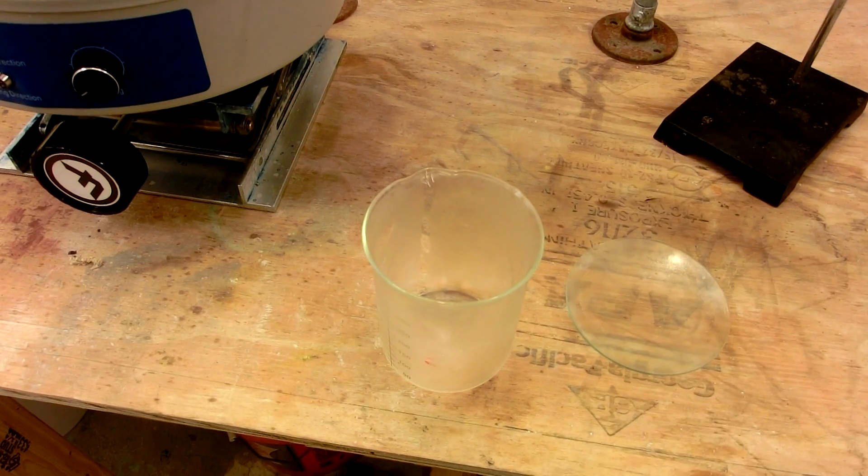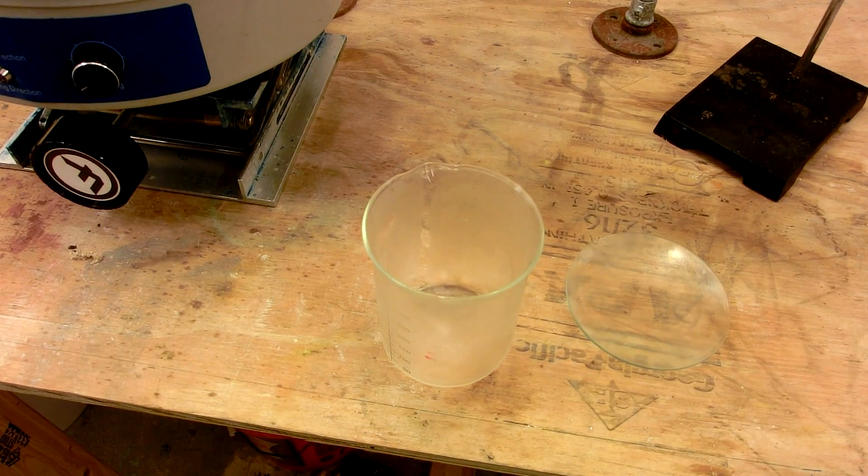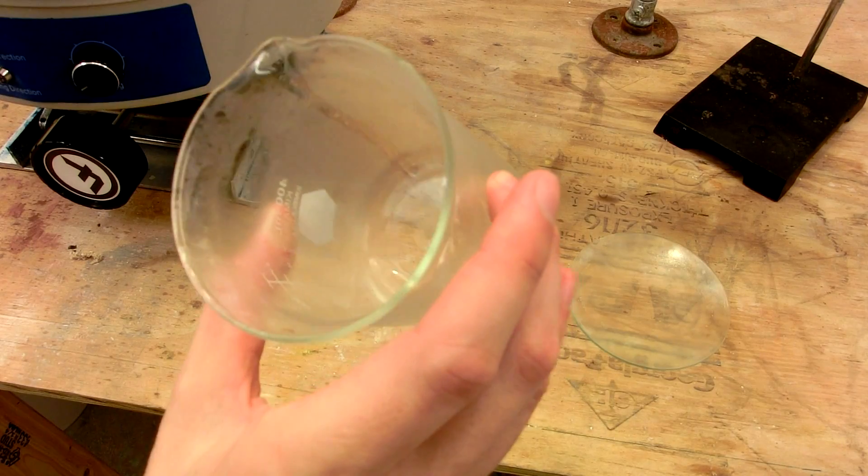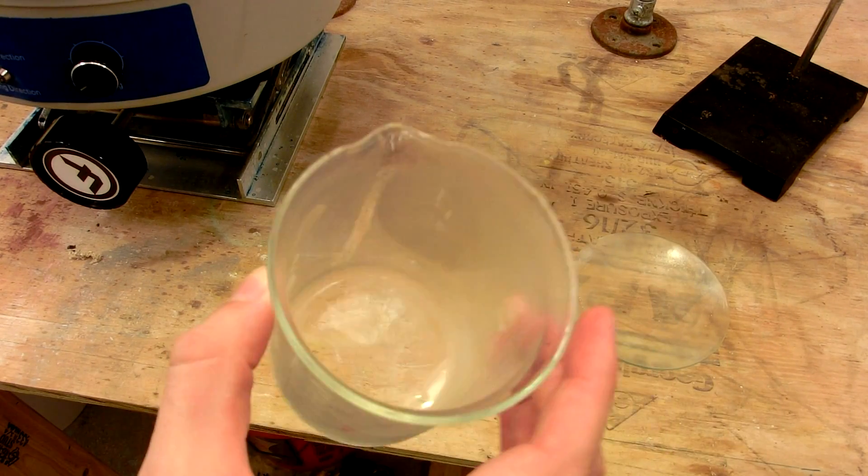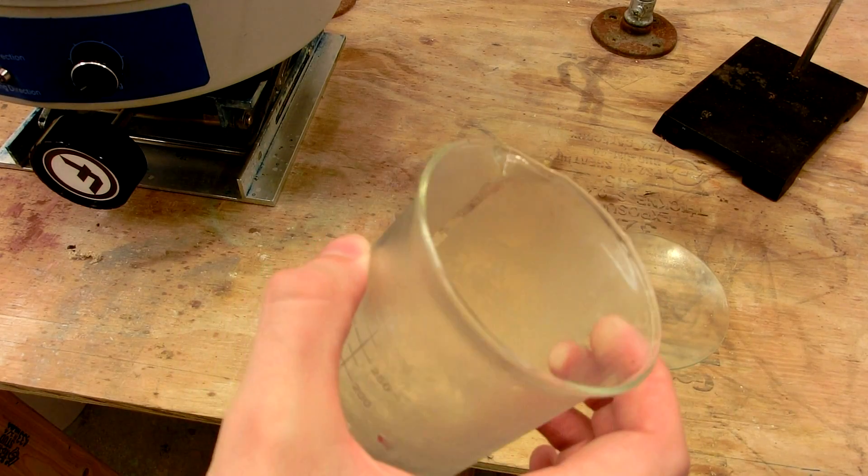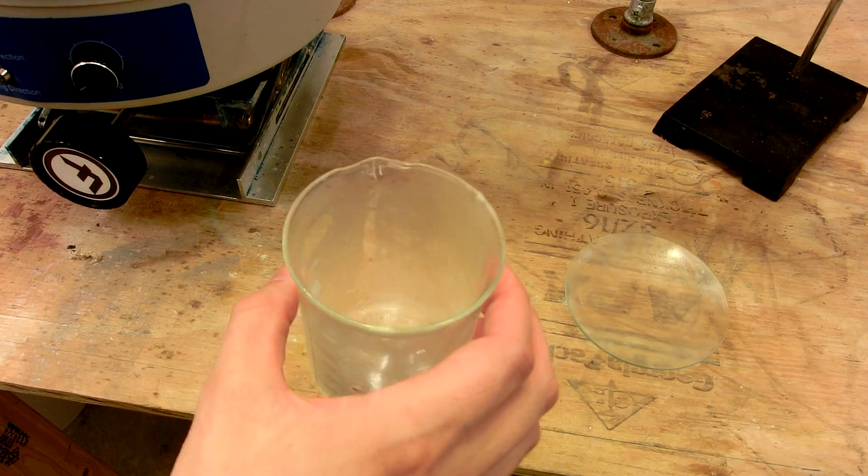While we're waiting, it's always good lab practice to begin cleaning some of your apparatus up. Notice this cold beaker here used to contain sulfuric acid. It doesn't really look like anything, so I could easily grab it later not knowing and get some sulfuric acid on my hand, which is dangerous. So always make sure you clean up after yourself.